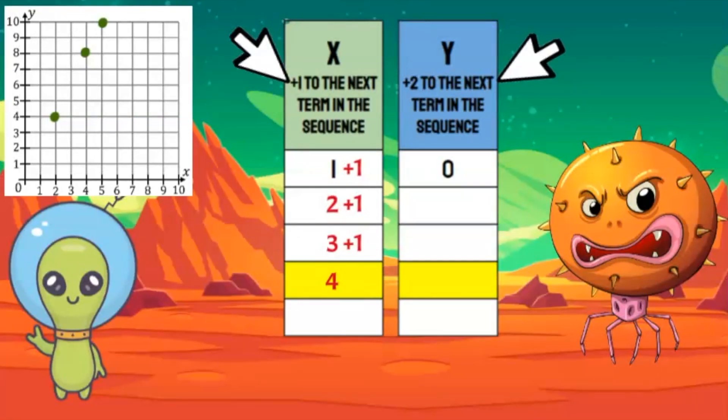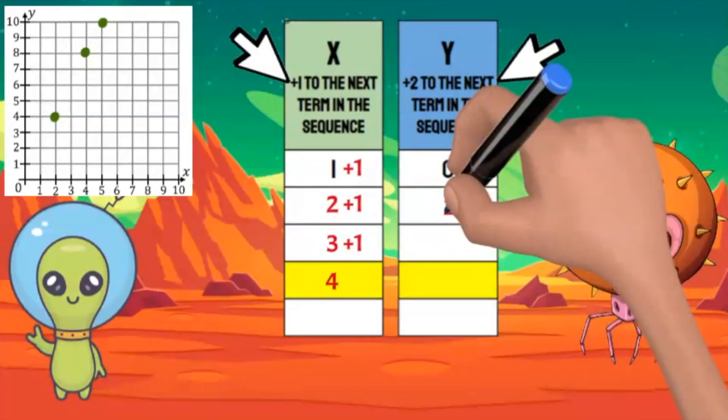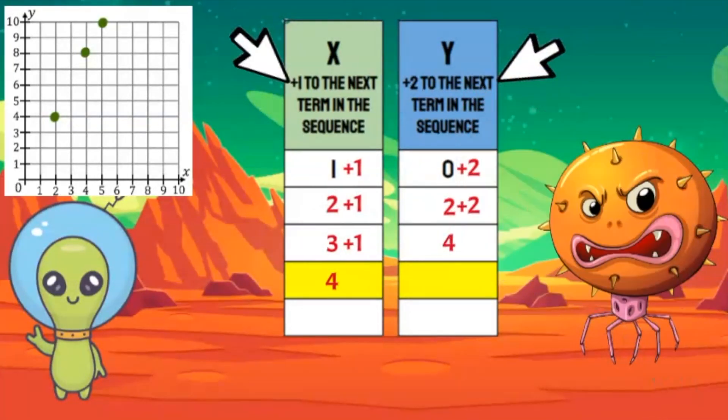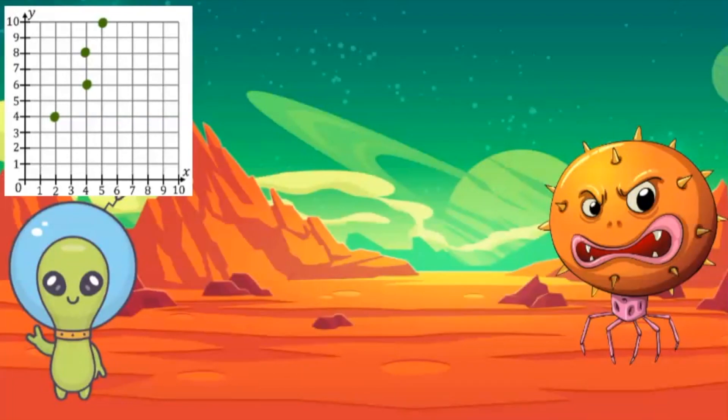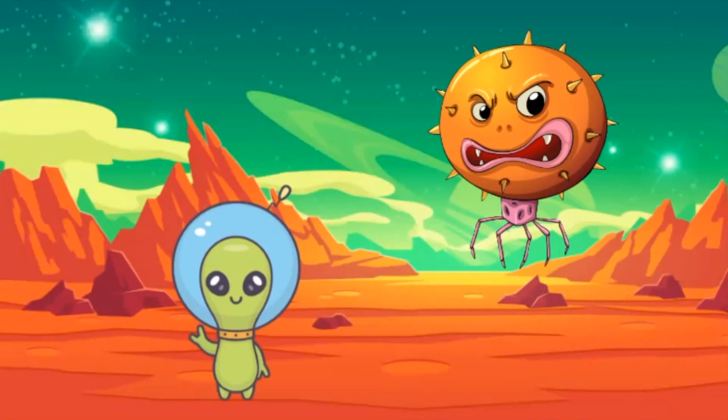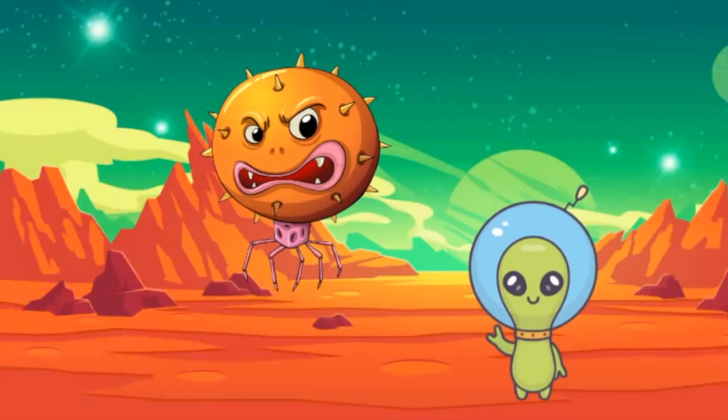Now I'll look at the Y coordinates. The rule is to add two. Zero plus two is two. Two plus two is four. Four plus two is six. Six is the Y coordinate I need. I can plot four, six by going to the right four and up six. You completed the map much faster than I thought, Oscar. I will step aside and let you follow the map to your home planet. I'm getting out of here before this guy changes his mind. See you next time!